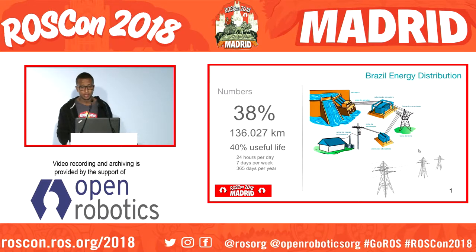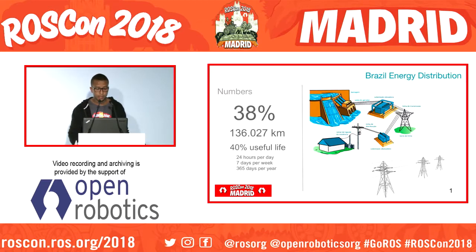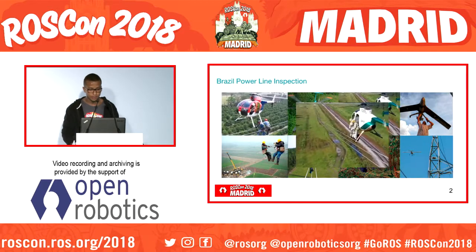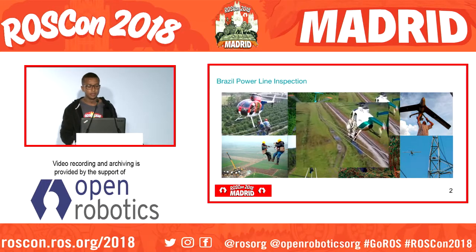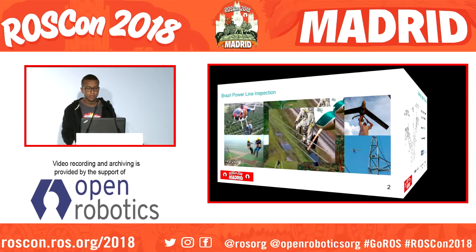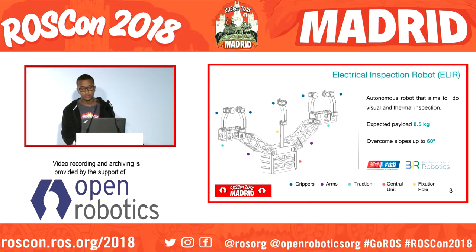In Brazil, almost 38% of the energy distribution is based on power line transmission. Every day, professionals jeopardize their lives trying to keep the security of the lines. Based on that context, we are developing an autonomous robot that aims to develop a visual and thermal approach to do inspection.